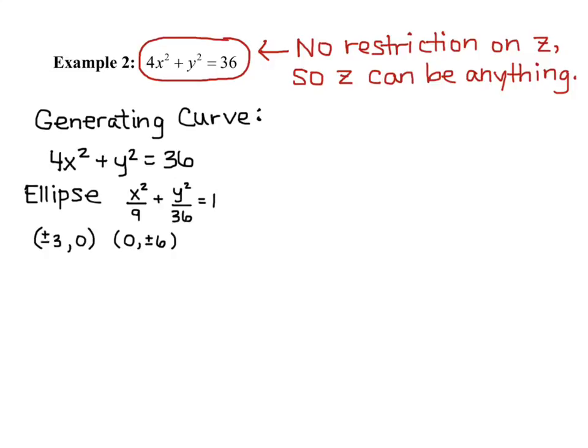So let's go ahead and put that on our xy-plane. We have negative 3 and 3 on the x-axis, negative 6 and 6 on the y-axis, and I have an ellipse that goes through all of those. Now what we want to do is put that in three dimensions.